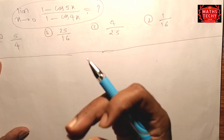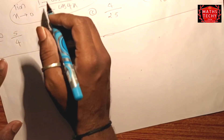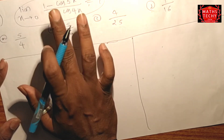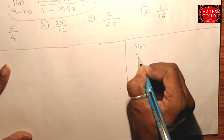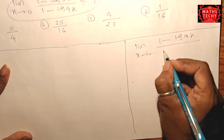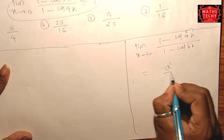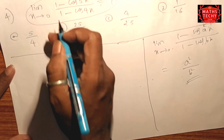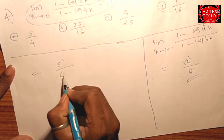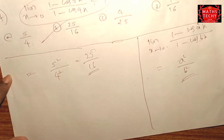In this chapter alone, there are a minimum of 30 to 50 shortcut tricks. For example, when you see the limit as x approaches 0 of (1 − cos ax) / (1 − cos bx), you can get the direct answer: the result is (a/b)².